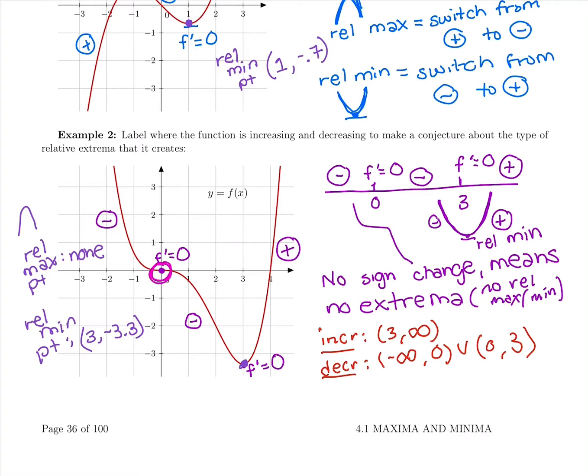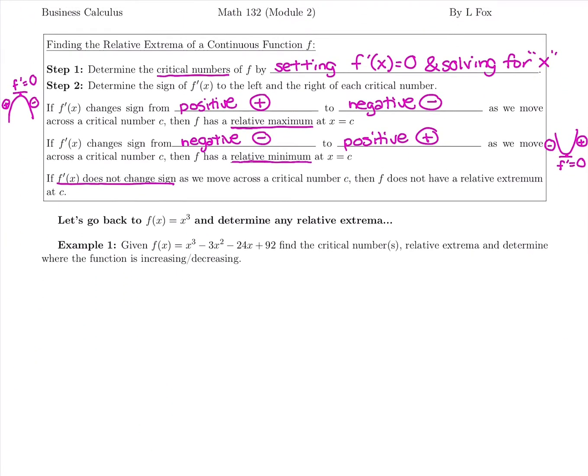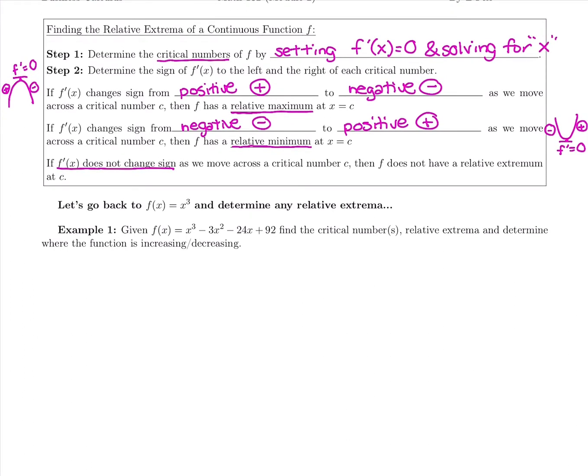We did not get a relative maximum when that happened at our critical number. Then we just don't have a relative extrema there.